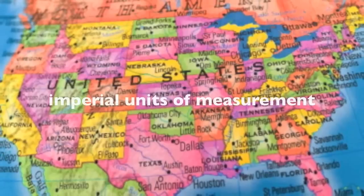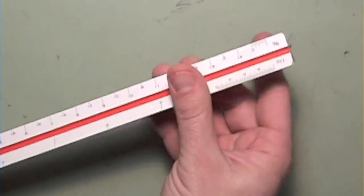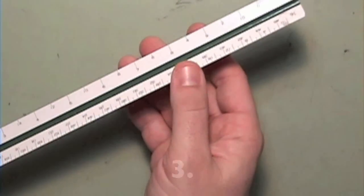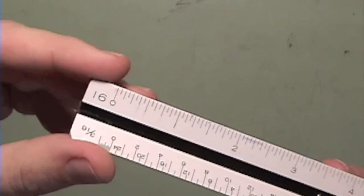Contrary to many places in the world, the U.S. still uses imperial units of measurement, or yards, feet, and inches. This is an architect scale. This one has three sides and 12 distinct scales.